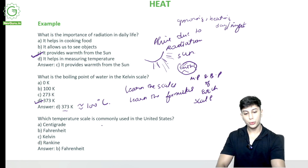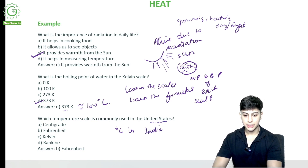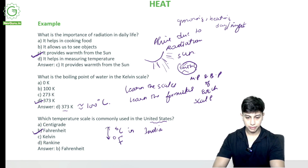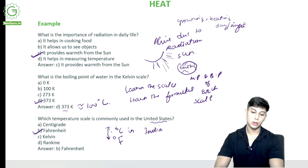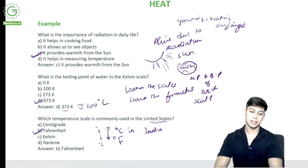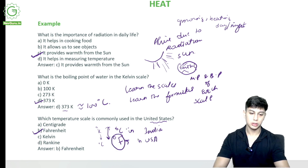Which temperature scale is commonly used in the United States? We use degree Celsius in India. In the United States, it is Fahrenheit. Remember the conversions between degree Celsius, degree Fahrenheit, and degree Kelvin. Fahrenheit is used in the USA.